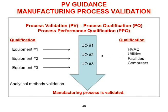Here's the same graph shown previously. The present terminology is Process Performance Qualification, which covers the various unit operations in manufacturing. We get through these steps with qualified equipment, qualified facilities, utilities and systems, and qualified analytical methods — and then our manufacturing process is validated.